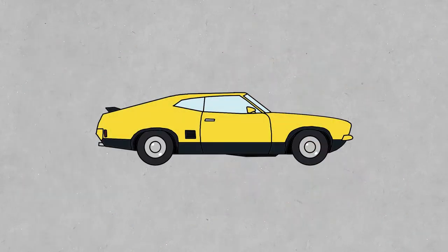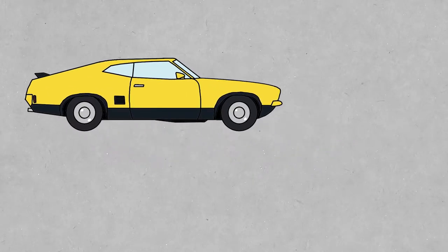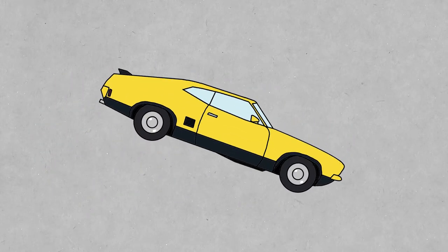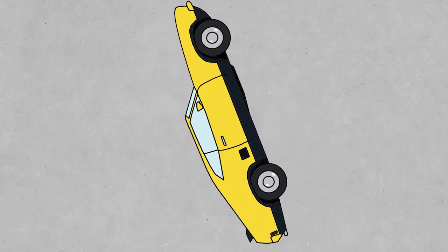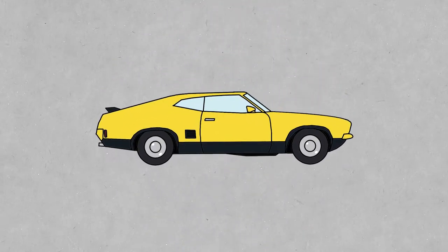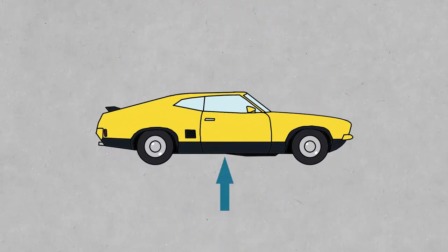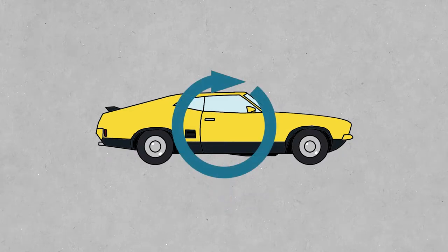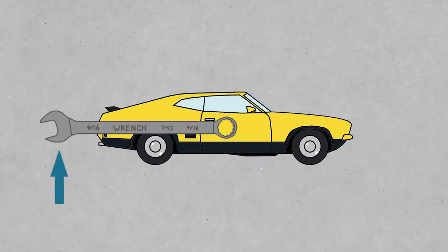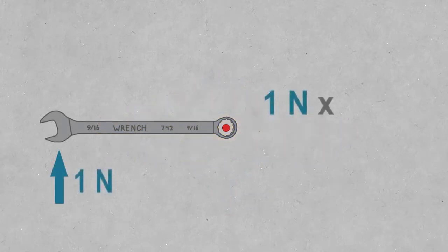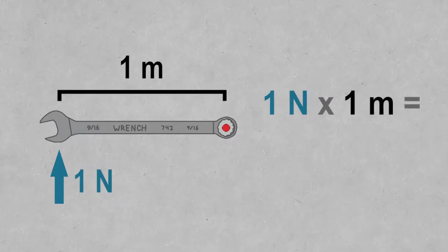This does get a little more complicated, though. Objects do more than just slide around. They also rotate. Luckily, the equations for rotation are pretty much the same. Force is replaced with a moment, which can itself be imagined as a force at a distance. If a force of one newton is applied at the end of a lever, which is one meter long, then the moment at the end is one newton meter. The force is simply multiplied by the distance.